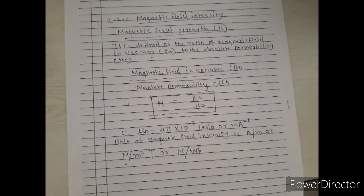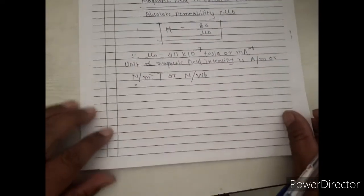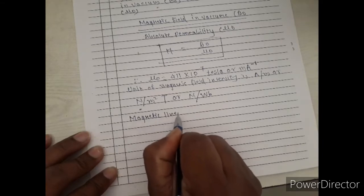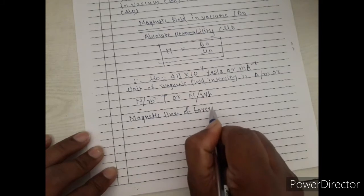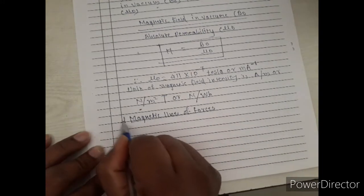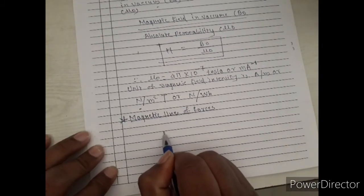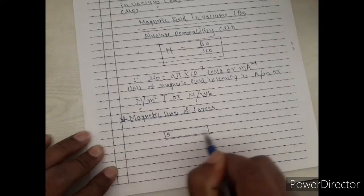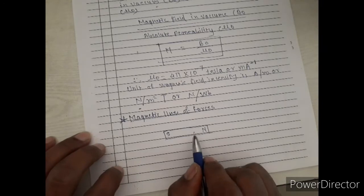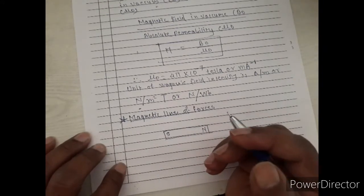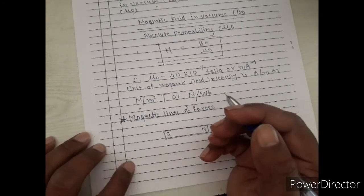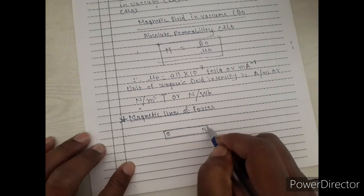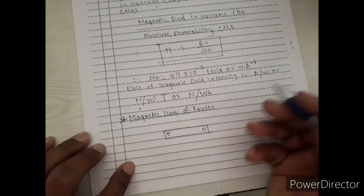The next point is magnetic lines of forces. Suppose this is a bar magnet — this is the south pole and this is the north pole. An imaginary line of force is there; it is an invisible thing. We cannot see the lines of forces but can experience them by using another magnet or iron pieces.